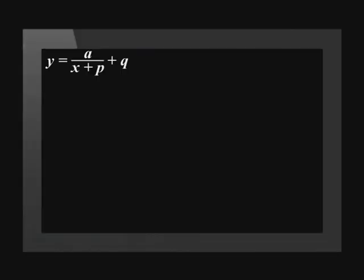Let's revise everything we know about the standard form of the hyperbolic function. The standard form is y = a/(x + p) + q.